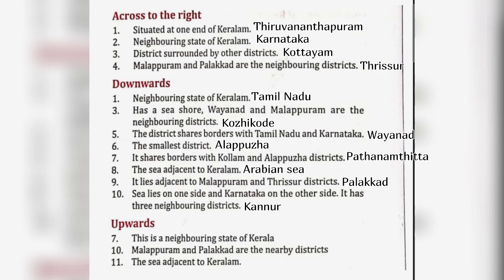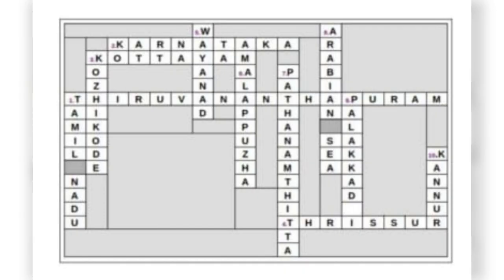10. Sea lies on one side and Karnataka on the other side; it has three neighboring districts — Kannur. Upwards: 7. This is a neighboring state of Kerala — Karnataka or Tamil Nadu. 10. Malappuram and Palakkad are the nearby districts — Thrissur. 11. The sea adjacent to Kerala — Arabian Sea. You have to fill the crossword like this.